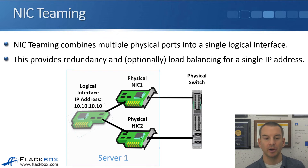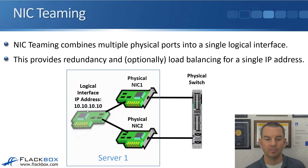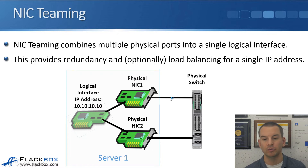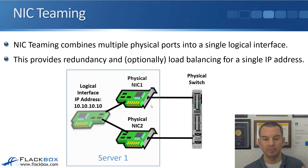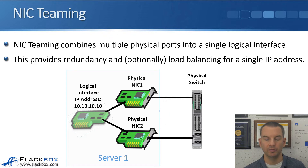It's much easier to bundle them into a single logical interface and have clients reach the server on that single IP address. That IP address can use the two different NICs with two different uplinks, giving redundancy. If NIC1 fails, it can still use NIC2. And optionally, I can get load balancing where traffic is sent through both NICs.